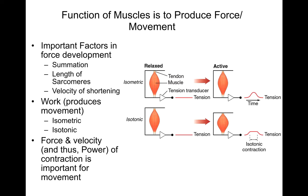There are several important factors in force development: summation, the length of the sarcomeres, and the velocity of shortening. Work happens when you produce movement, and you can have isometric and isotonic contraction. Force, velocity, and therefore the power of contraction are all important for movement.